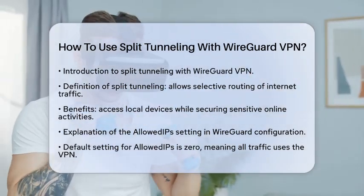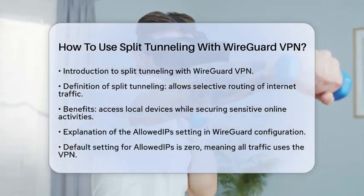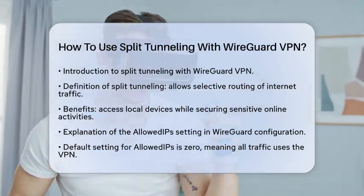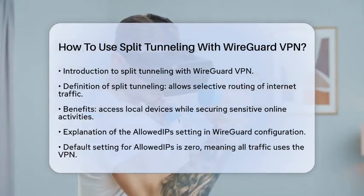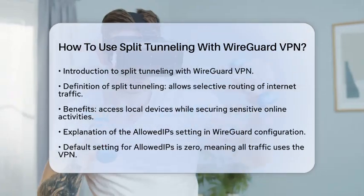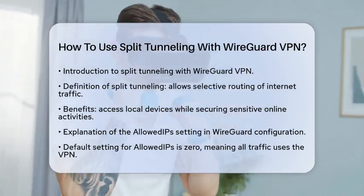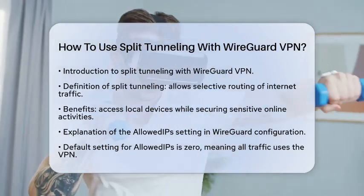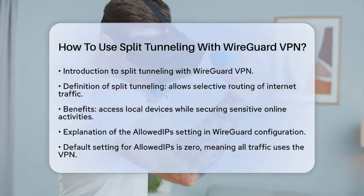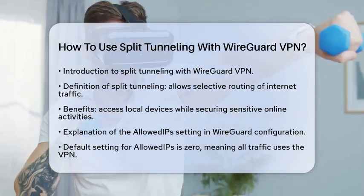To start, you need to understand the basic concept. Split Tunneling works by defining specific IP addresses or subnets that will use the VPN. WireGuard uses a setting called AllowedIPs in its configuration files to manage this.